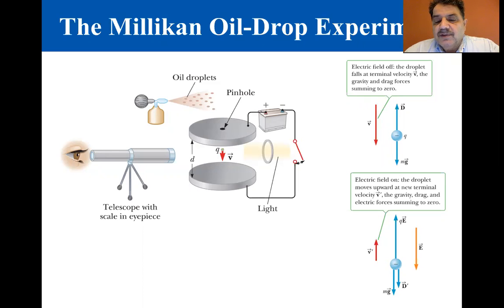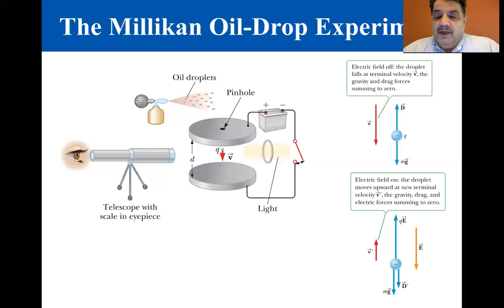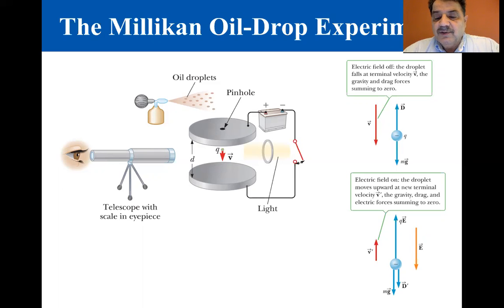The figure on the left shows the apparatus. Oil drops that had been charged by friction on an atomizer are allowed to pass through a small hole in the upper plate. A horizontal light beam is used to illuminate the droplets, which are viewed by a telescope with its axis at right angles to the beam.